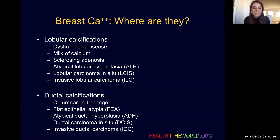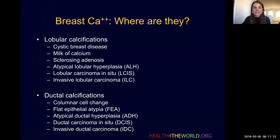Calcifications also occur frequently in the ducts — benign things such as columnar cell change, or atypical entities such as flat epithelial atypia or atypical ductal hyperplasia. Malignancies may also present as calcifications occurring within the ducts, and these include ductal carcinoma in situ (DCIS) as well as invasive ductal carcinoma.